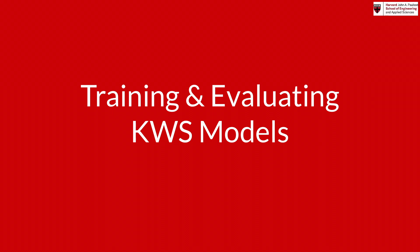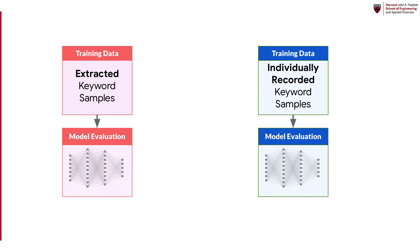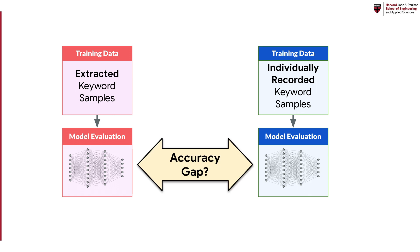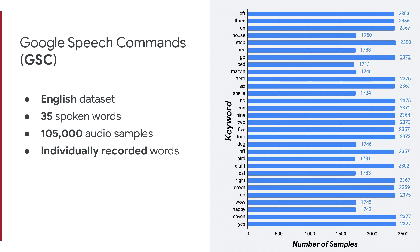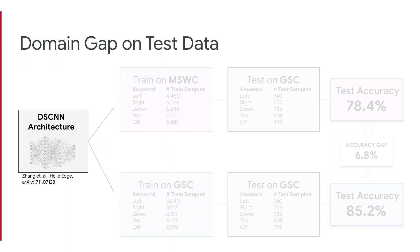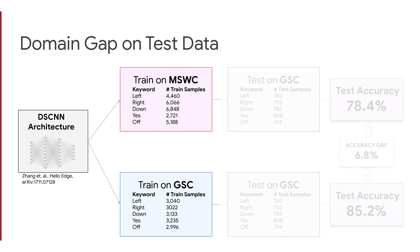We evaluate the accuracy of keyword spotting models trained using our dataset. In particular, we consider the potential accuracy gap between models trained on extracted keyword data and models trained on individually recorded keyword samples. To do so, we compare our dataset to Google Speech Commands, a gold standard in keyword spotting research. This dataset provides 35 keywords in English and over 105,000 verified recording samples. We hold fixed a common keyword spotting model architecture and train two models: one using our data and another using Google Speech Commands data.